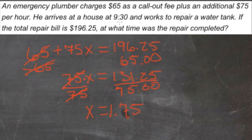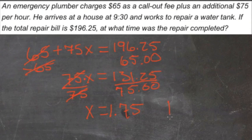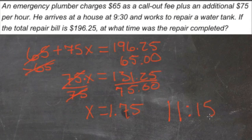If he started at 9:30, then he went from 9:30 to 10:30. And then three quarters of an hour is 45 more minutes, so he went from 10:30 to 11:15. He was done at 11:15.